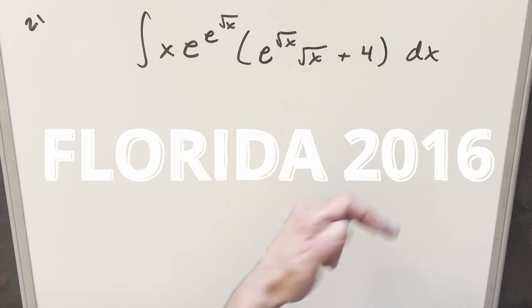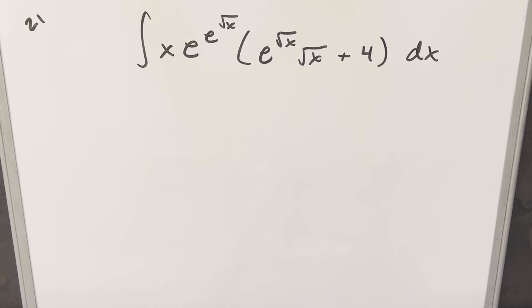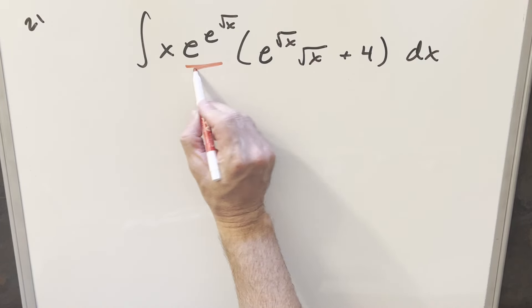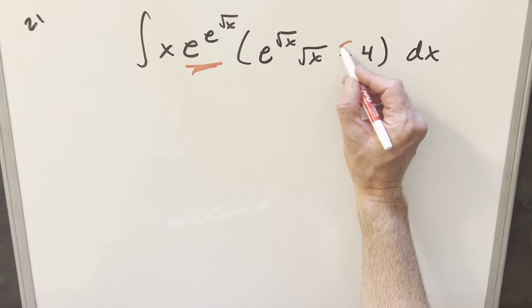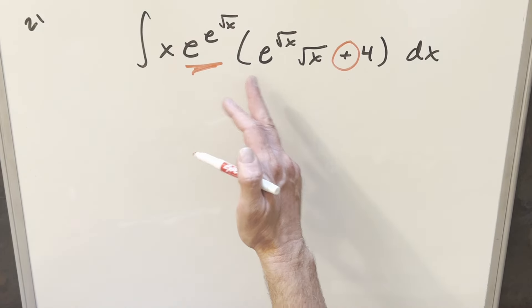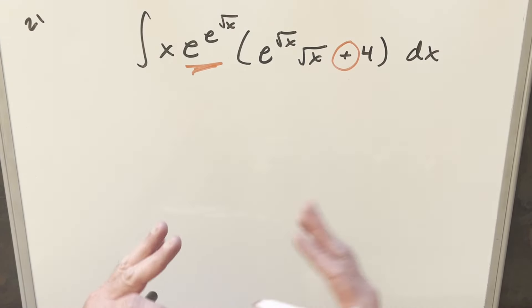We have this whole complicated expression dx. This is actually the type of problem that comes up a lot in integration bees, and the giveaway—there's a couple things that are kind of giving it away—is that this is really complicated and also that we're adding here. It's making me think if I distribute this out and separate it into two terms, this is somehow going to be the reverse product rule.